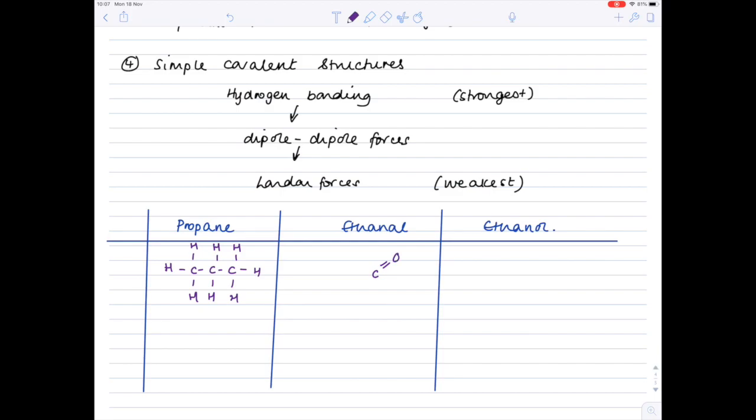Ethanol is an aldehyde which means it has the C double bond O H, so CHO functional group. Eth meaning it has two carbons, let's just complete the molecule. And then ethanol is an alcohol, so it has the OH functional group. Eth meaning that it has two carbons again, so again I'm completing my molecule.